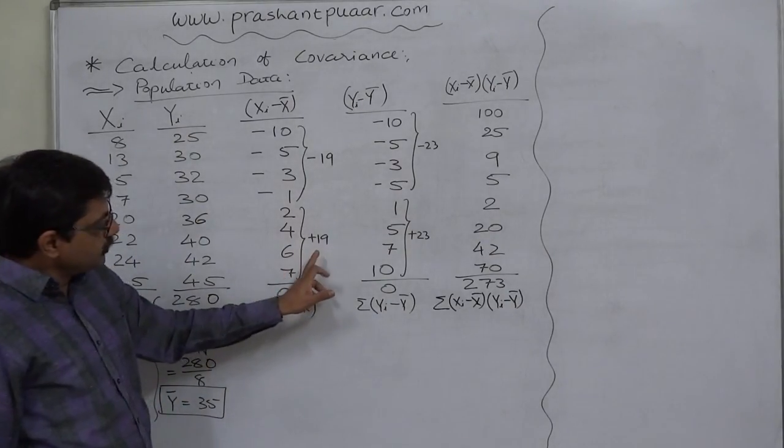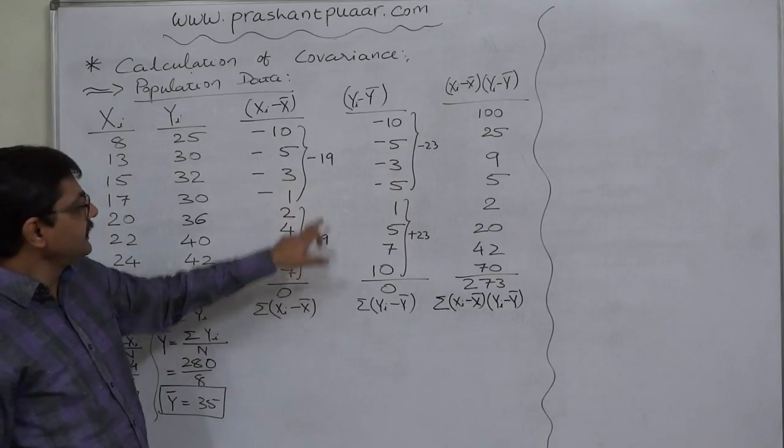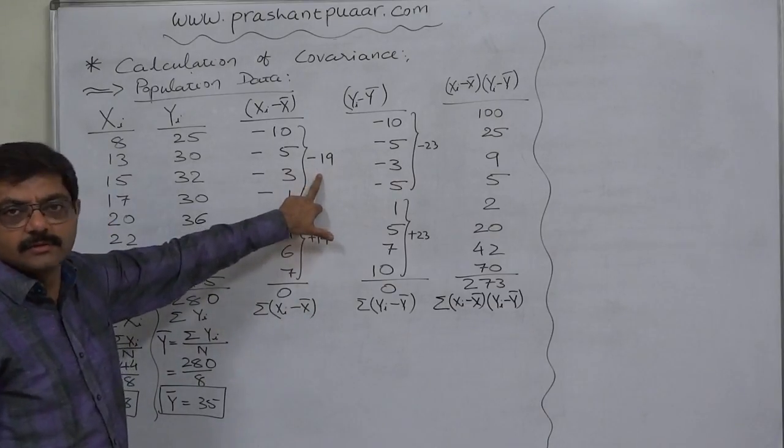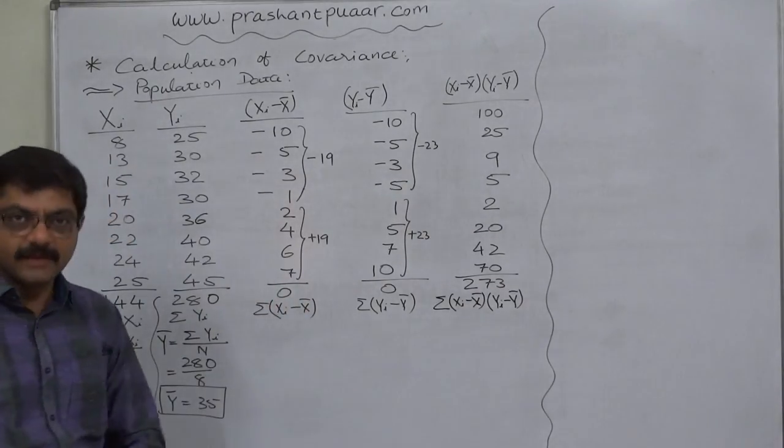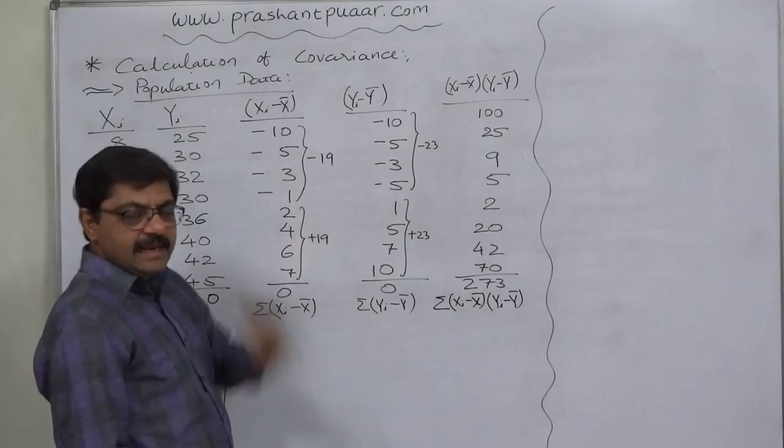The summation of the positive deviations comes to positive 19 and summation of the negative deviations comes to negative 19. 19 minus 19, it is 0. That means all values are correct, we can believe that.